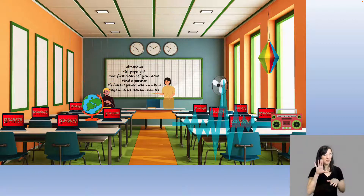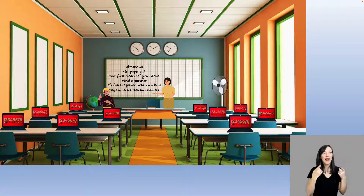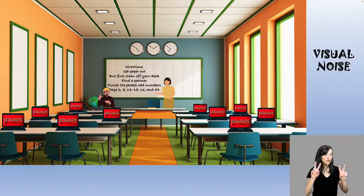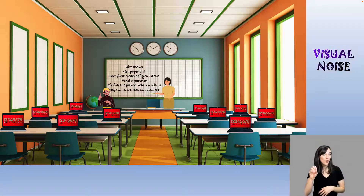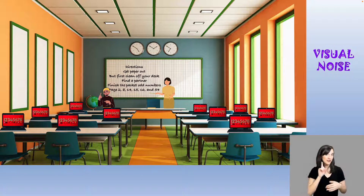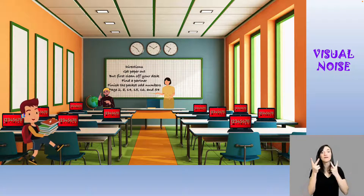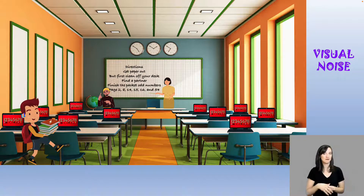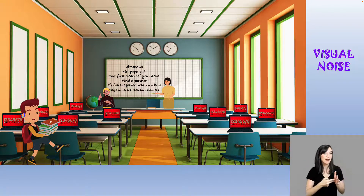Having an overly decorative or visually distracting learning environment also impacts students who are deaf or hard of hearing. This is called visual noise. Students who are DHH rely on visual cues to access communication. If there's too much visual noise, students who are DHH can't focus on the important signals.